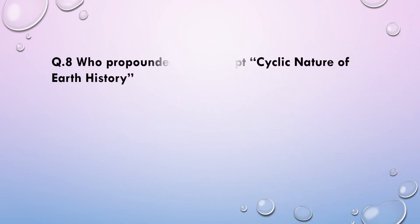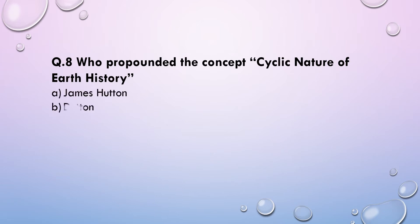Next question: Who propounded the concept of the cyclic nature of Earth's history? (a) James Hutton, (b) Dutton, (c) William Morris Davis, or (d) none of these. The answer will be James Hutton. The concept of the cyclic nature of Earth's history was propounded by James Hutton.